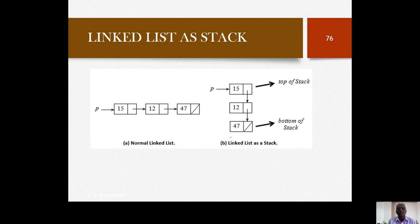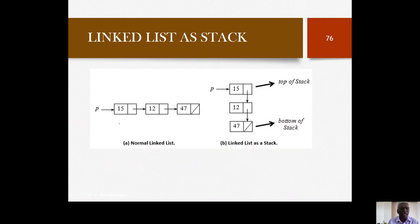Underflow is still possible: when the stack is empty — meaning the linked list is empty — and you try to retrieve an object, you flag an underflow error. If we tilt the linked list 90 degrees, it looks like a stack. With elements 15, 12, and 47: 47 is the bottom of the stack and 15 is the top. P now becomes the stack pointer — the top of the stack — and the elements are linked in a singly linked fashion.